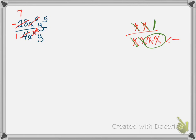The leftover x's are in the denominator. The opposite is true with y to the fifth over y — that's y to the first in the denominator. We subtract 5 minus 1, so the extra y's are in the numerator. My final answer is negative 7y to the fourth over x squared.